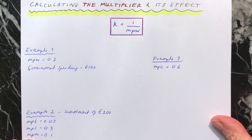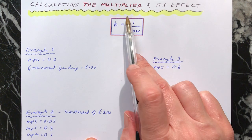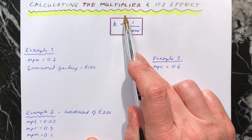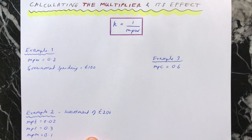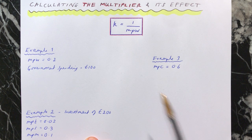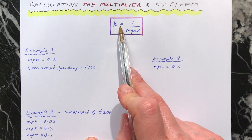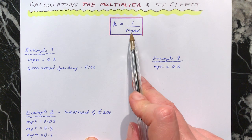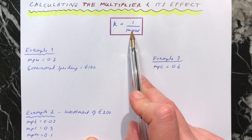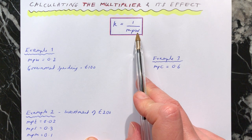Hi everybody. We're now going to look at how we calculate the value of the multiplier and then what its effect is and how we calculate that. The formula for the multiplier is k — that's a lowercase little k — equals 1 divided by the marginal propensity to withdraw.